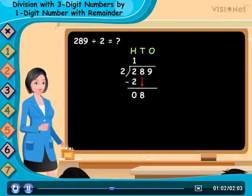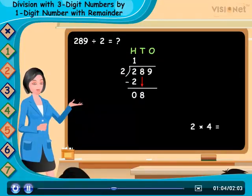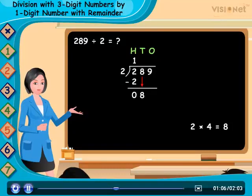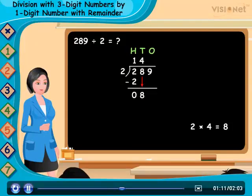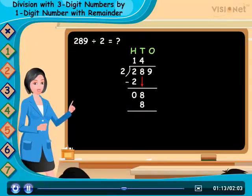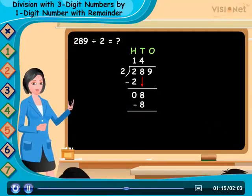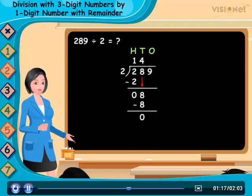As 2 into 4 is equal to 8, so write 4 in the tens place of quotient and write 8 below 8. And subtract 8 minus 8 is equal to 0.